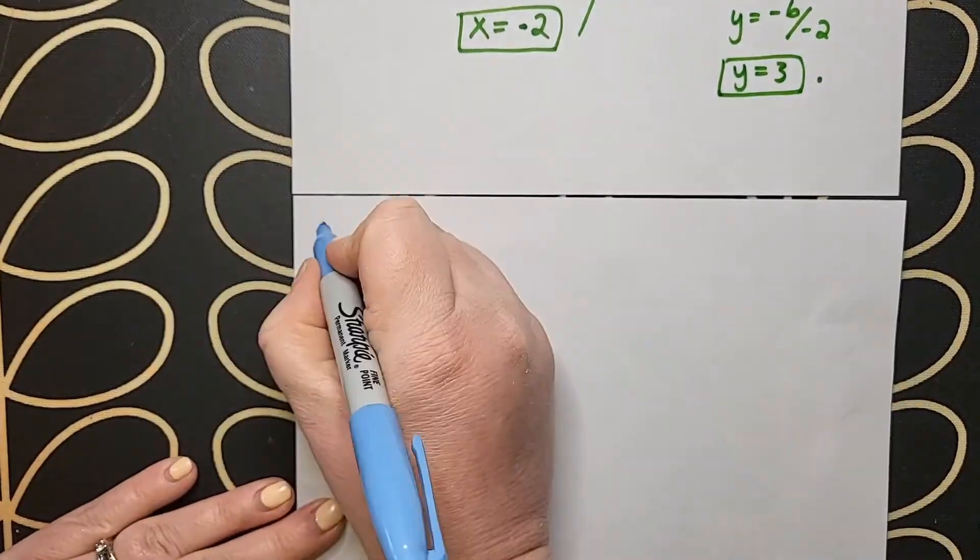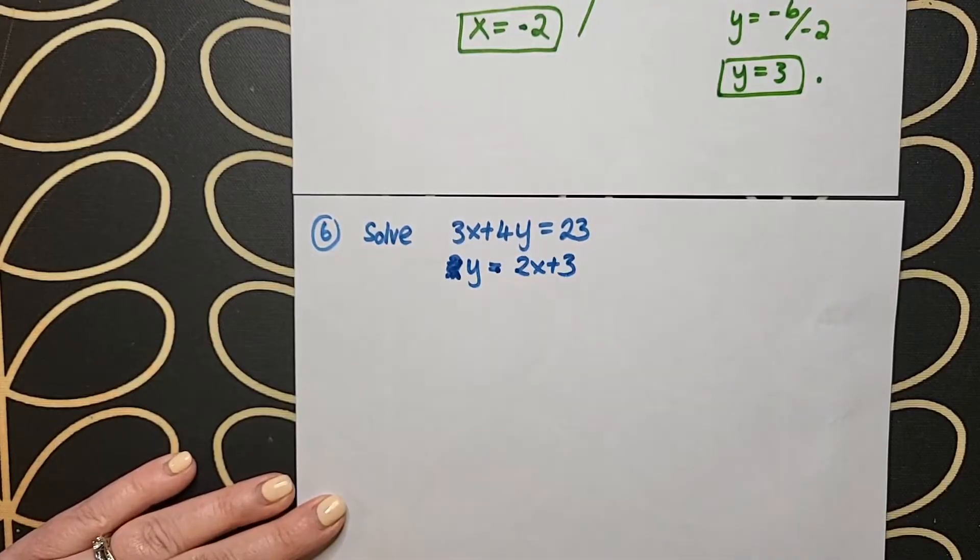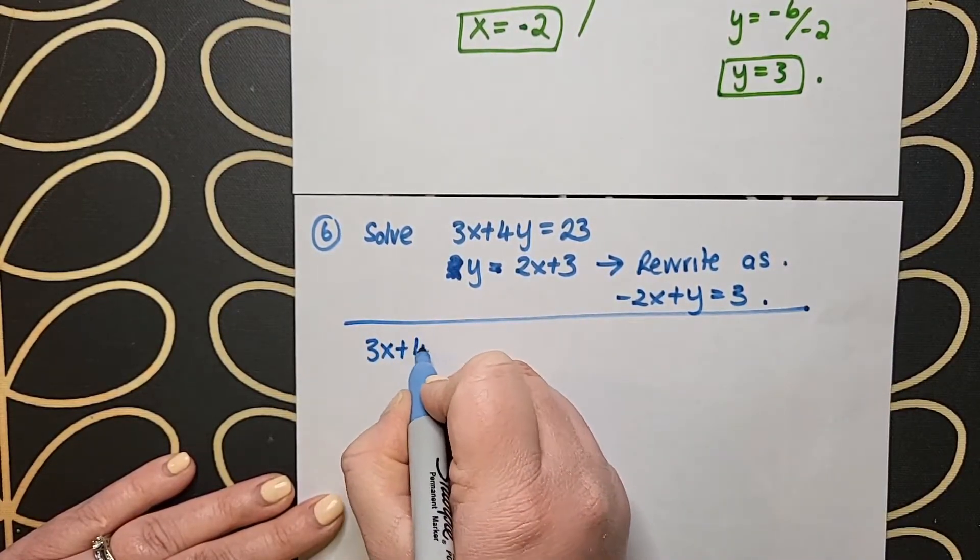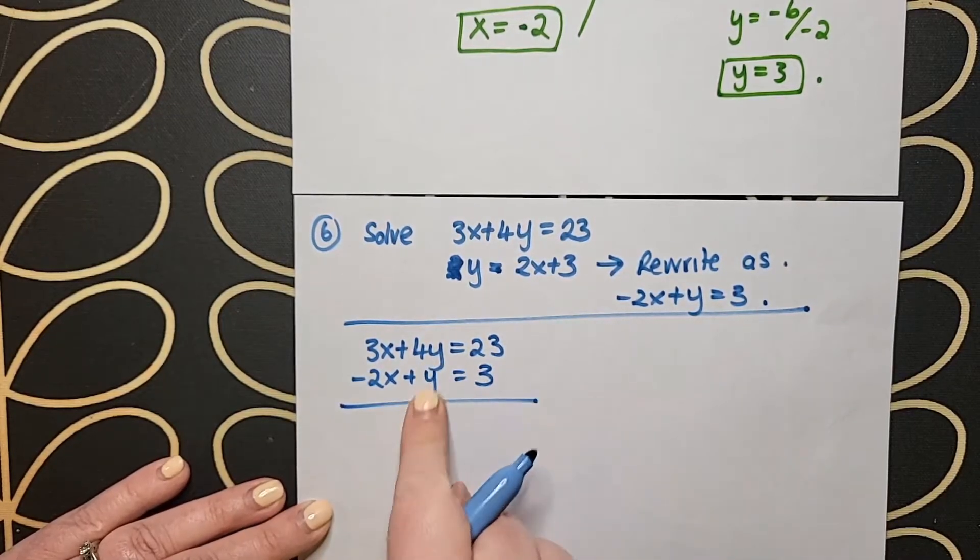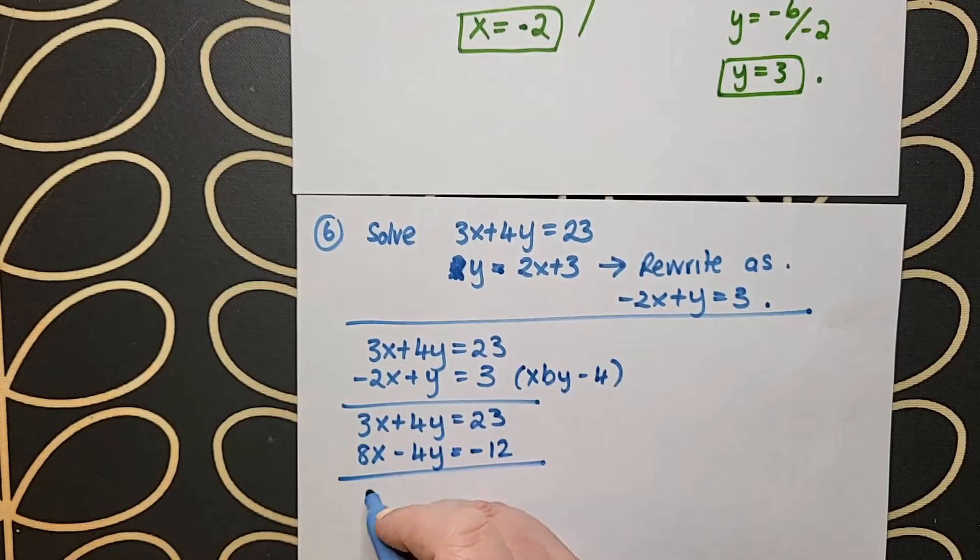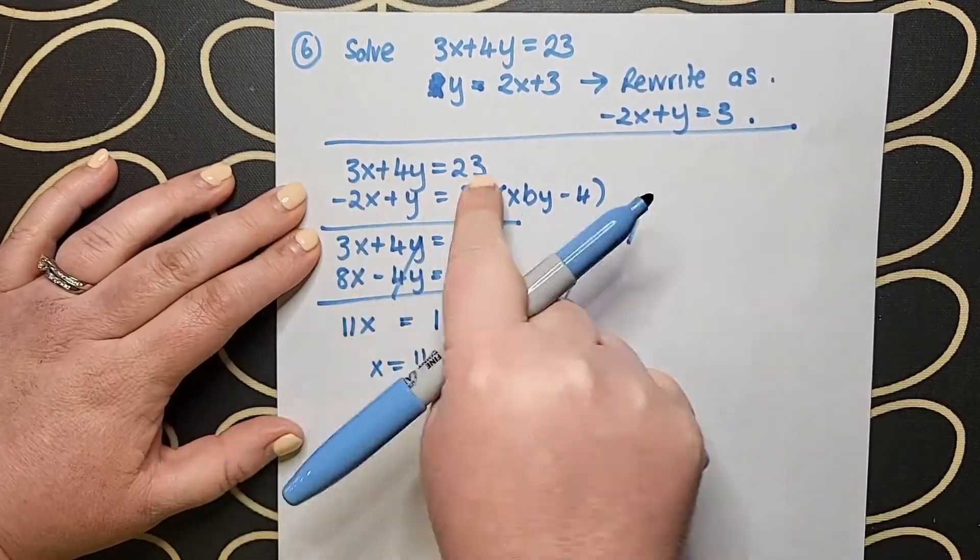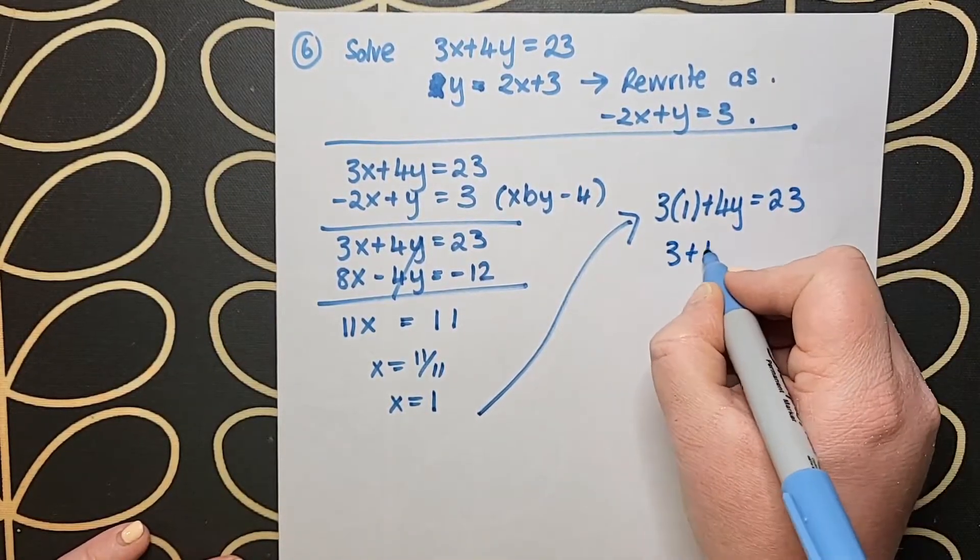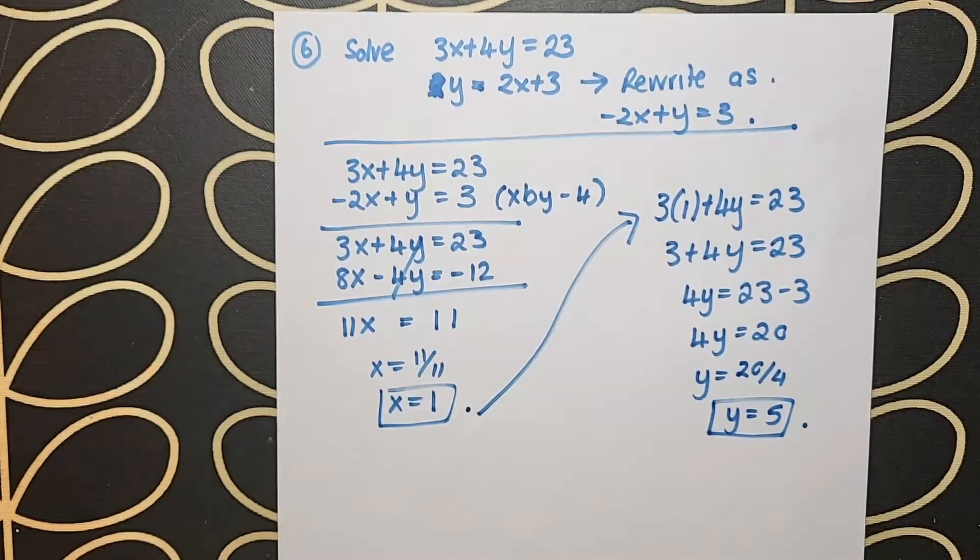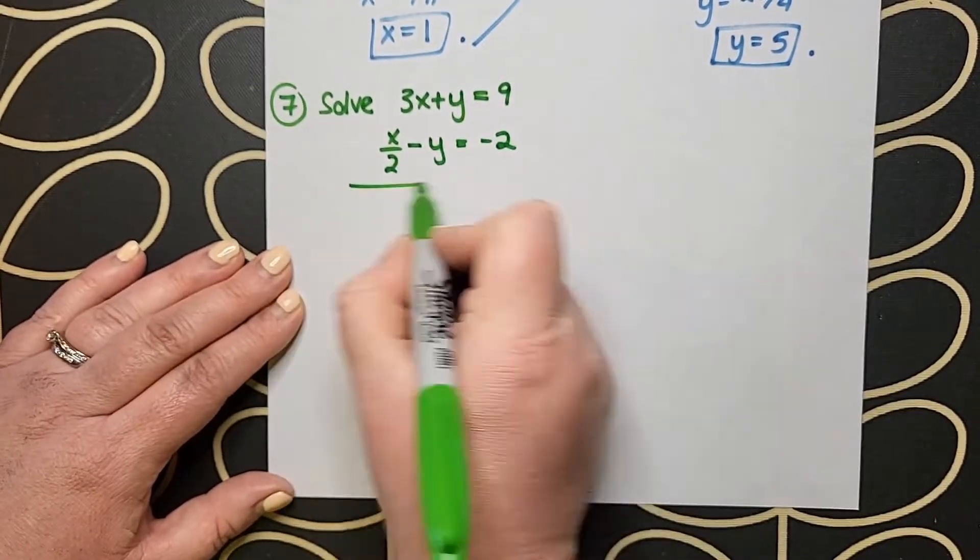Question 6 throws in a little curveball. As you can see me writing it out, you'll notice something that's astray with the second line. It's not in the correct form. It's very important with this style of simultaneous equations that my x's, y's, and numbers are aligned vertically. I need to rewrite that line as minus 2x plus y equals 3. Now I'm ready to go. I analyze my x's and y's. I notice y's is the faster route because I only have to multiply the second line by minus 4 to give me plus 4y and minus 4y. In step two they cancel out, and I find x is equal to 1. I sub that back in and solve for y equals 5.